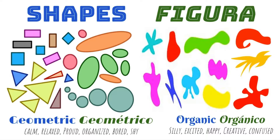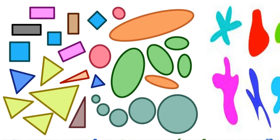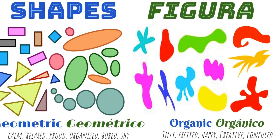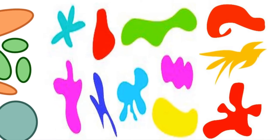Shapes can also be used as symbols by artists to show different emotions. Geometric shapes feel more orderly, while organic shapes are more free-form — they might feel more crazy or wild.